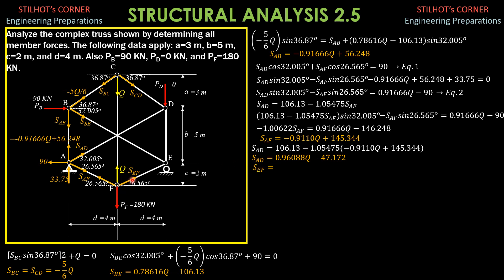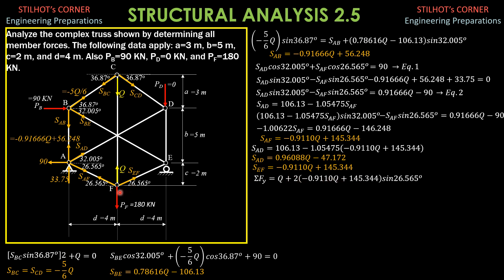We proceed to joint F. By summing up forces horizontal and using symmetry, we conclude that SEF is equal to SAF, so SEF equals negative 0.9110Q plus 145.344. We can now solve for Q by summing up forces vertical: Q plus 2 times SAF times sine 26.565 degrees, minus 180 equals 0. Simplifying: 0.18518Q equals 50.001, so Q, which is the stress in CF, equals 270.011 kilonewtons.